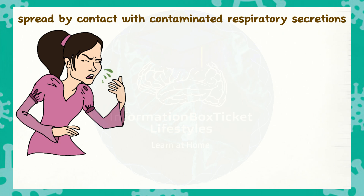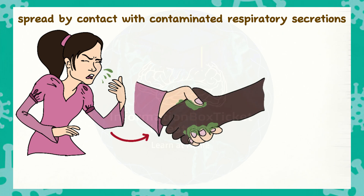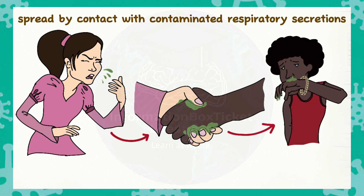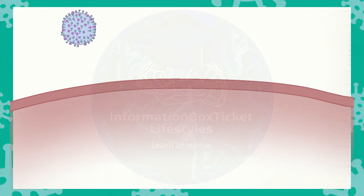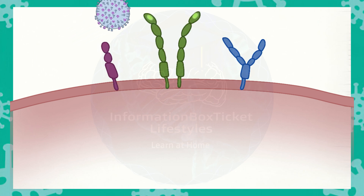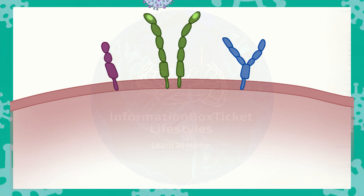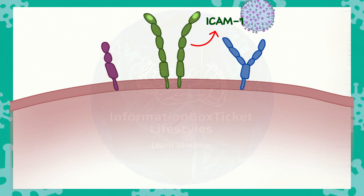Touching an infected surface, such as a door handle or shaking hands, and then touching an uninfected respiratory mucosa is a common route to spread infection, as rhinoviruses may live up to two hours on the skin and four days on surfaces. Once rhinovirus enters the respiratory mucosa, it targets cell surface receptors found on nasal epithelial cells. Rhinoviruses may enter cells by targeting specific receptors, one of which being intercellular adhesion molecule 1, or ICAM-1.